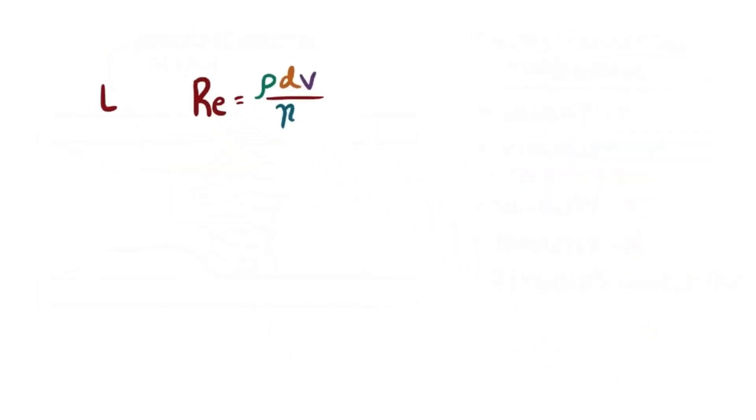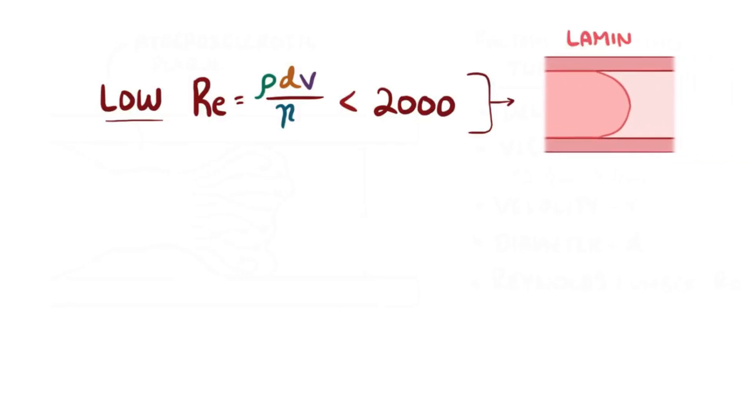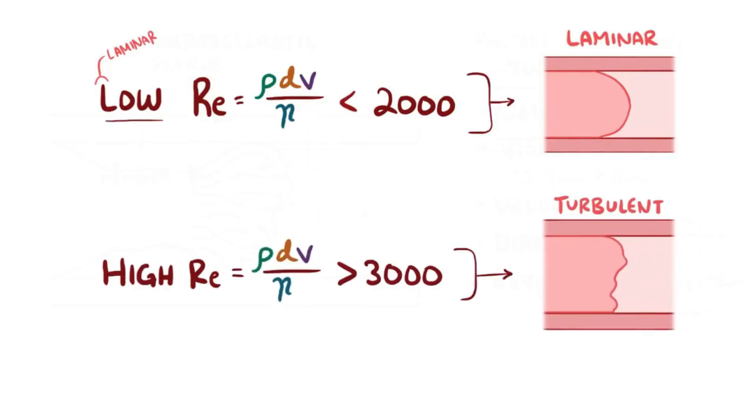Generally speaking, if the Reynolds number is low, below about 2,000, then blood flow will be laminar. Think L for low and L for laminar. But if the Reynolds number is above 3,000 it will likely be turbulent. A Reynolds number between 2,000 and 3,000 is somewhere in between.